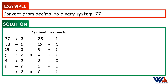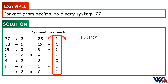Now, you simply need to write out the remainders in the reverse order by rotating them clockwise, and the result will be 1, 0, 0, 1, 1, 0, 1. Since a byte has 8 bits and here we have only 7 bits, we can write the remainder of the binary number as 0s on the left side.